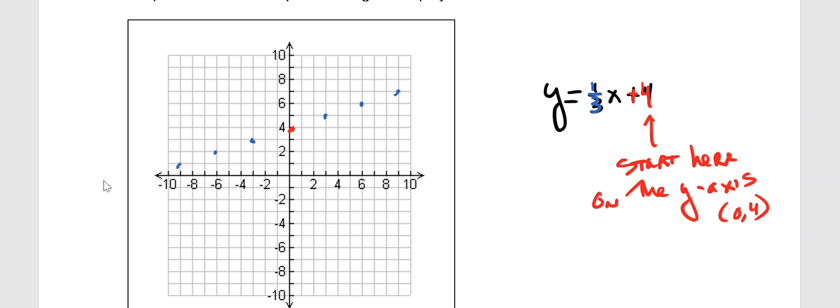There are the points. 1, 2, 3, 4, 5, 6, 7 points for us to accurately, with a straight edge, not freehand like I'm doing here, but with a straight edge, to graph our straight line. That is the line. And for the equation, what's my equation again? Y equals 1 third X plus 4.